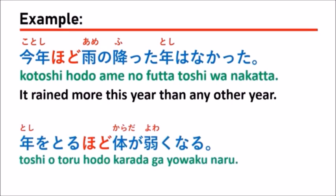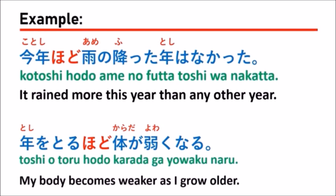The fourth example is: 年を取るほど体が弱くなる (Toshi wo toru hodo karada ga yowaku naru), which means 'My body becomes weaker as I grow older.' Here, 年を取る means 'to get older,' and the verb 取る is used in dictionary form with hodo.